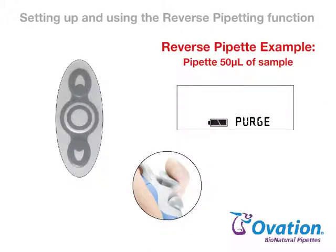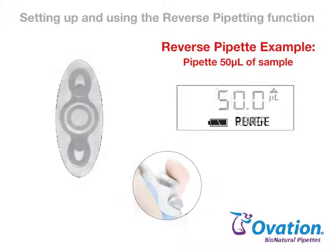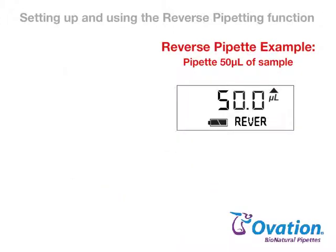The purge prompt is displayed after the sample is dispensed. Press and release the pipetting trigger to purge liquid remaining in the tips into a suitable container. The pipet is now ready to perform the next reverse pipetting cycle.